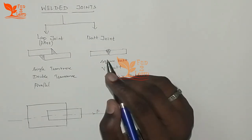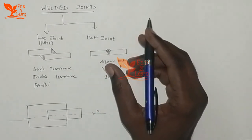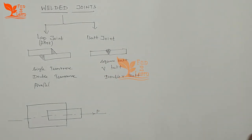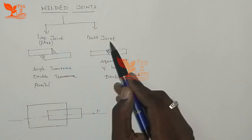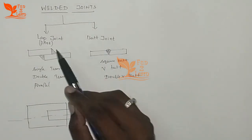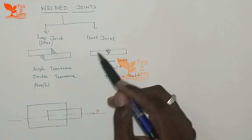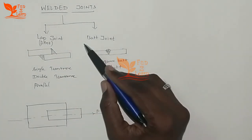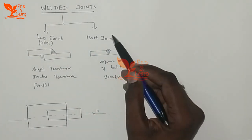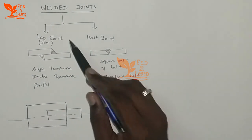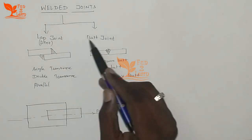A welded joint is a permanent joint. If you have a bolted joint, it is a temporary joint. Welded joints have two major classifications: lap joint and butt joint. There are also T-joints and corner joints, but the major classification is lap joint and butt joint.